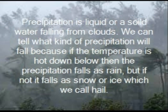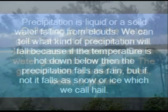Precipitation is liquid or solid water falling from clouds. We can tell what kind of precipitation will fall because if the temperature is hot down below then the precipitation falls as rain. But if not it falls as snow or ice, which we call hail.